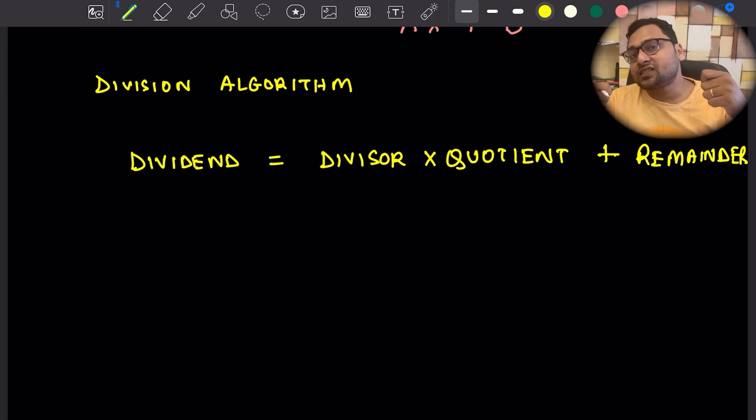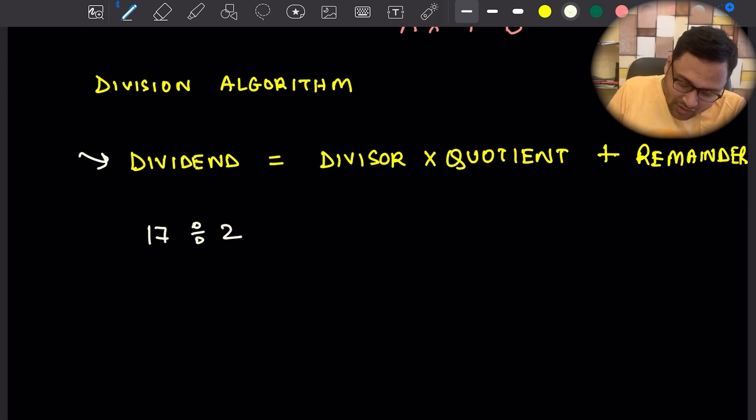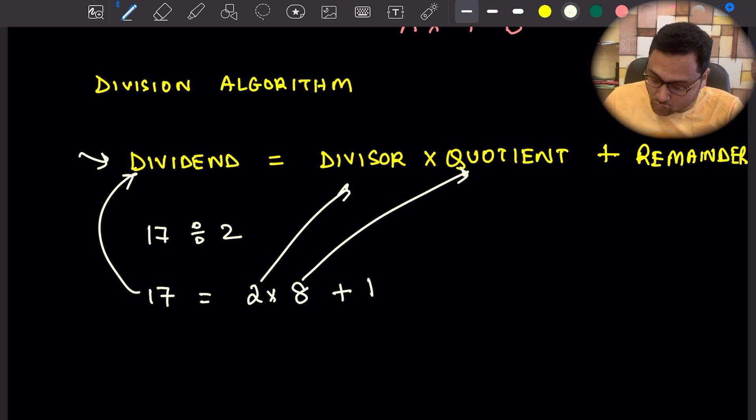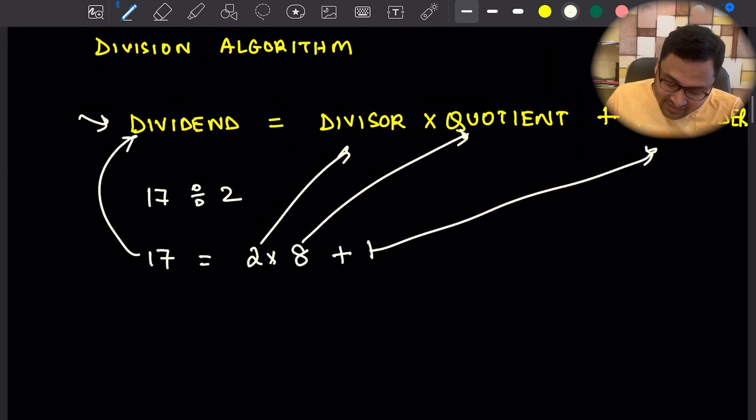This works very nicely for numbers and algebraic expressions. For example, if you divide 17 by 2, you can write 17 as 2 times 8 plus 1. So 17 is the dividend, 2 is the divisor, 8 is the quotient, and 1 is the remainder.